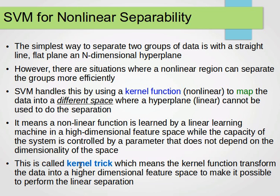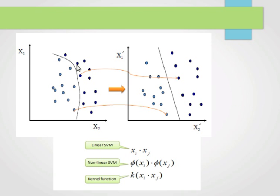The kernel trick uses a kernel function to transform the data into a higher dimensional feature space to make it possible to perform linear separation. For example, if we look at these points — they are not linearly separable, as we can't draw a straight line to separate them — the kernel trick uses a kernel function to transform the data from x1, x2 space to x1 prime, x2 prime space. These are different features resulting from applying the kernel function, and as you can see, the data is now linearly separable. So you can do linear SVM using xi·xj, or nonlinear SVM using the kernel function.